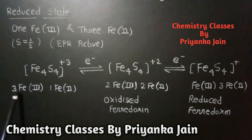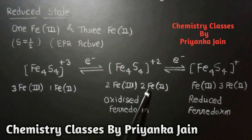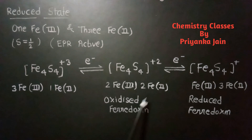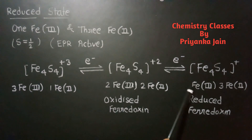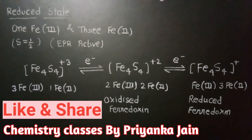In the [Fe₄S₄]³⁺ state, three irons are in +3 and one iron is in +2. In the [Fe₄S₄]²⁺ state, two irons are in +3 and two are in +2 — this is called oxidized ferredoxin. In the [Fe₄S₄]⁺ state, one iron is in +3 and three irons are in +2 — this is called reduced ferredoxin. This covers all the important content about ferredoxin for competitive exams. Thank you.